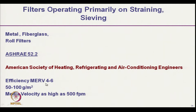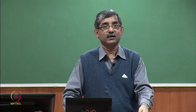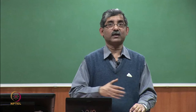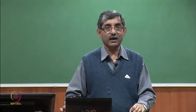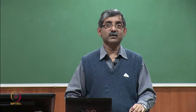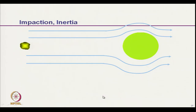A MERV value of 4 to 6 means lower filtration efficiency. This requires fabric with lower GSM — 50 to 100 grams per square meter. This type of filtration can take place at very high velocity. For coarser filtration we can use higher velocity, but for very fine particle filtration we have to reduce the fluid velocity.